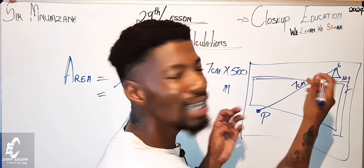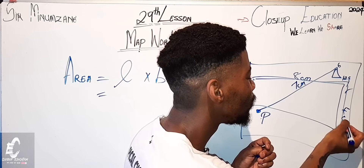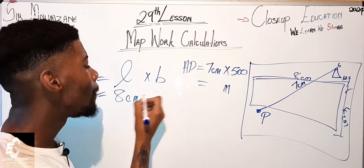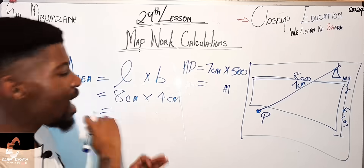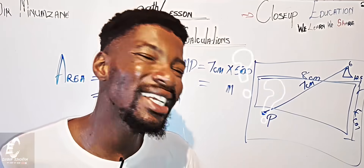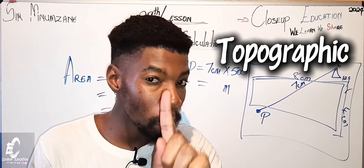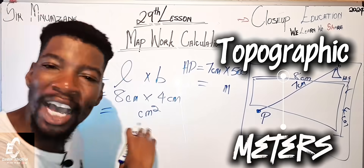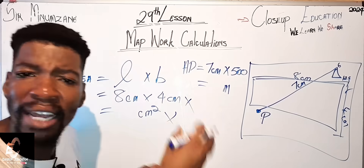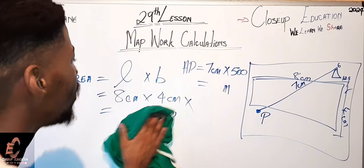Let's say the length is eight centimeters and the breadth is four centimeters. You might think you just multiply eight by four and get the answer in centimeters squared — but that would be wrong if the question asks for meters. You have to convert before multiplying, not at the end. Re-check: what type of map is it, and what unit does the final answer need to be in?